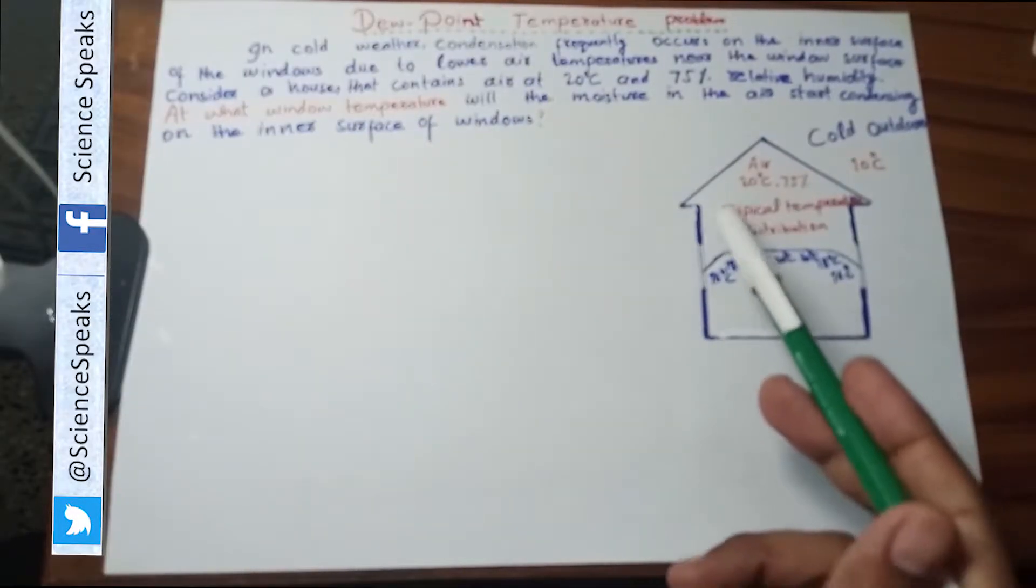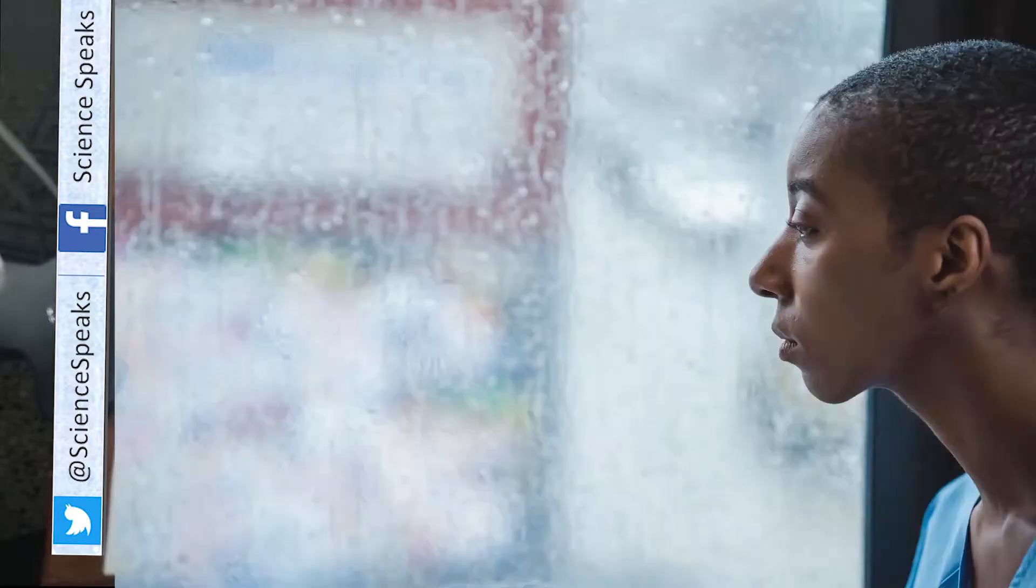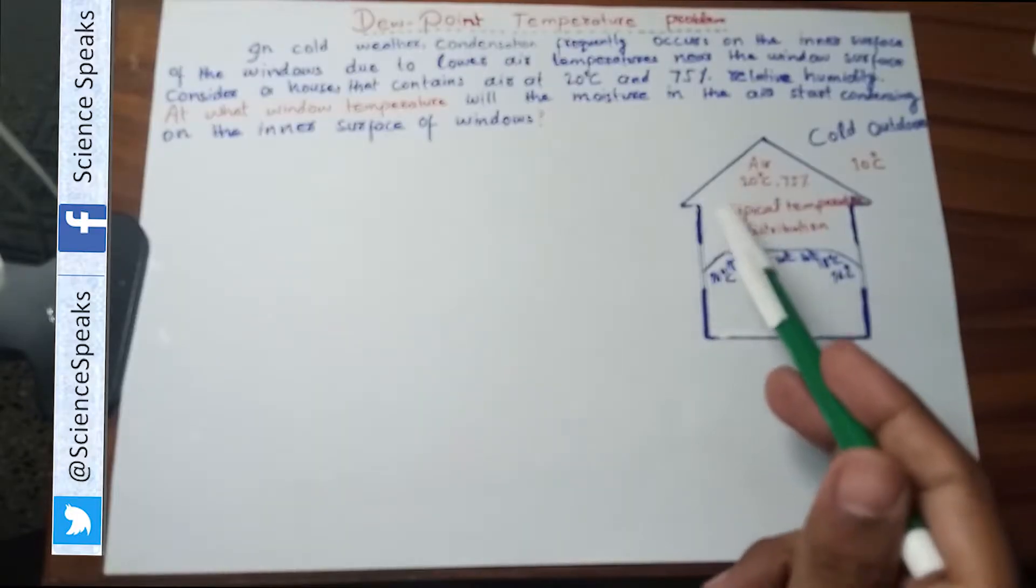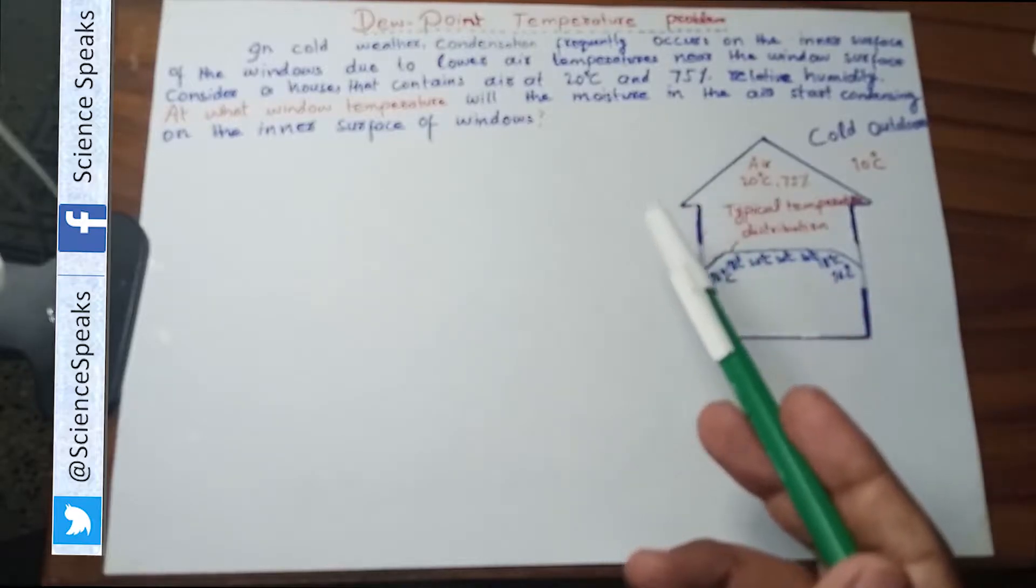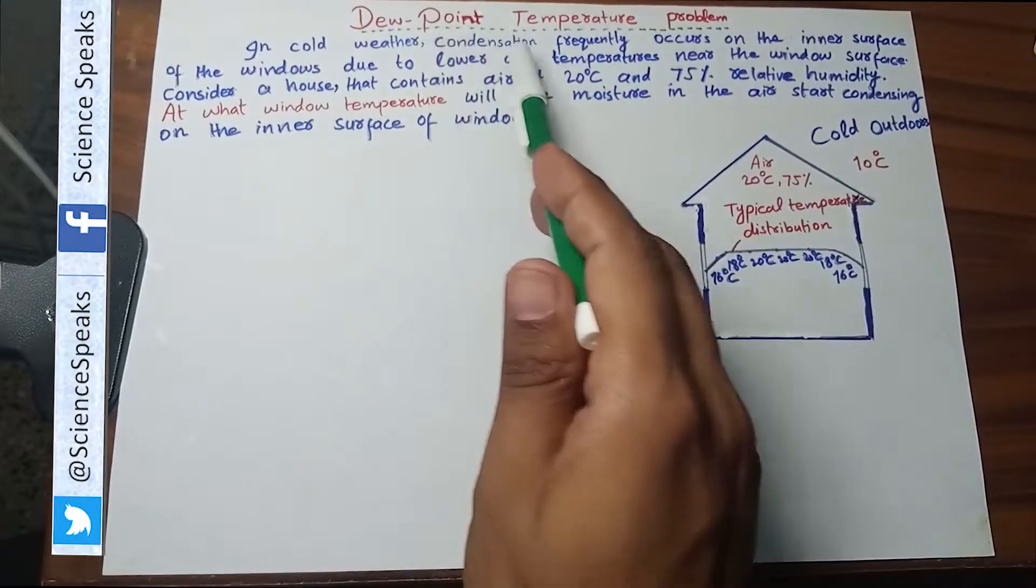You probably have observed in winter the inner side of your home windows get fogged. You see little water drops there. Why are those water drops formed? How are they formed? Today in this video we are going to solve a problem related to that.